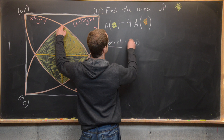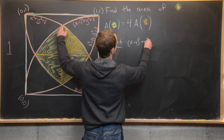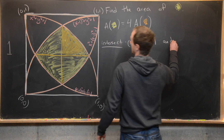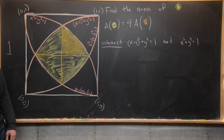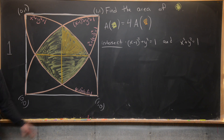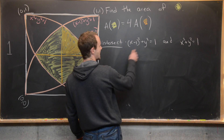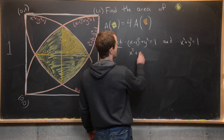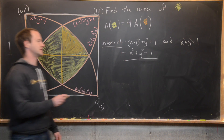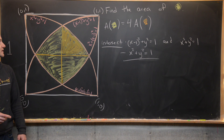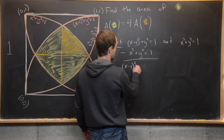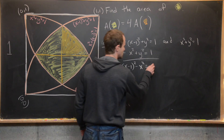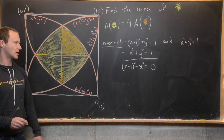To find the intersection point of two circles, we solve the system: (x - 1)² + y² = 1 and x² + y² = 1. Subtracting the two equations gives (x - 1)² - x² = 0, and the y² terms cancel.